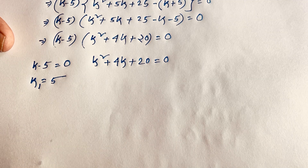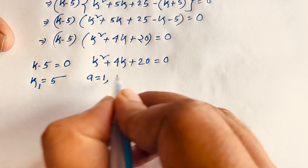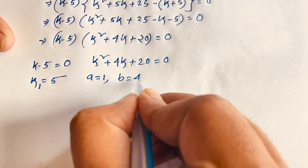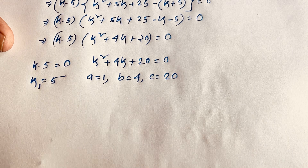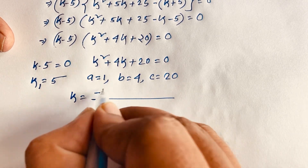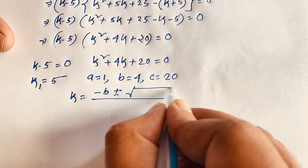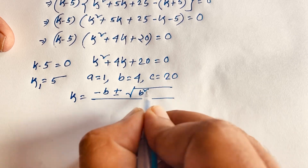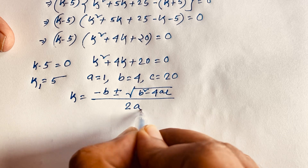For the quadratic k² + 4k + 20 = 0, we identify a = 1, b = 4, and c = 20.